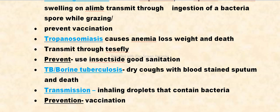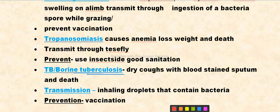Trypanosomiasis causes anemia. Another disease is bovine TB. Animals with TB must be isolated from those who work closely with cattle. What we have to do is dry coat, dry muscle coat, and blood stain testing. Sputum testing is also used.